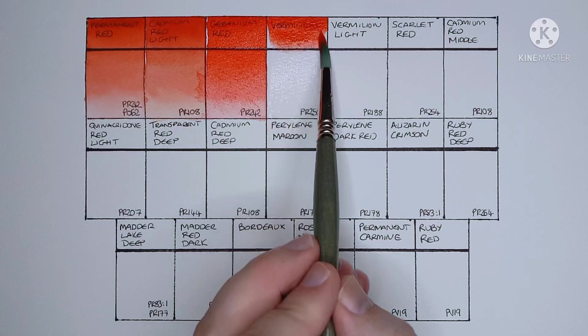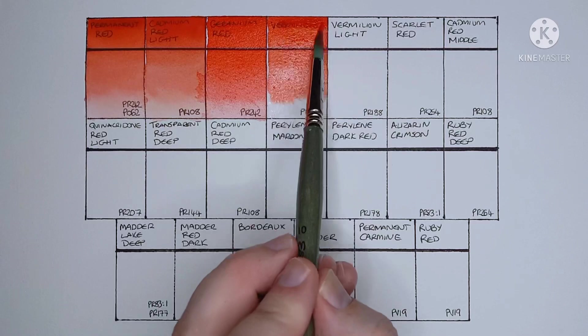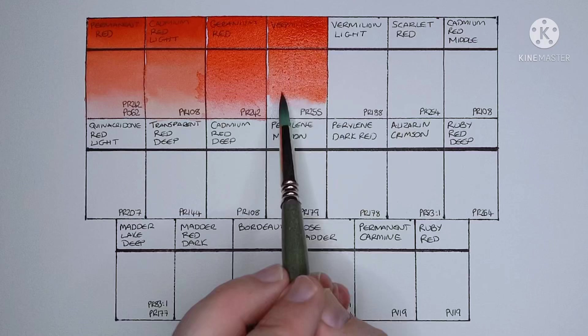Next we have vermilion, and it's made from PR255. Yeah, it's very nice. It's kind of similar to the cad red light and permanent red in my opinion.